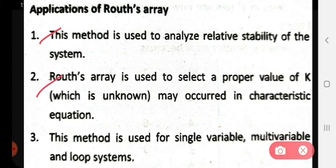The second application is that Routh's array is used to select the proper value of K, which is unknown and may occur in a characteristic equation. It can select the proper value of K that is unknown in the characteristic equation.